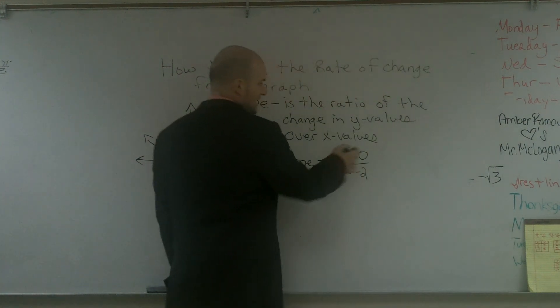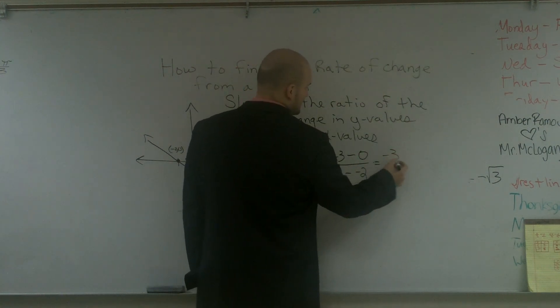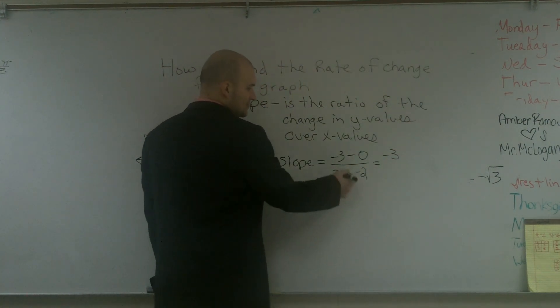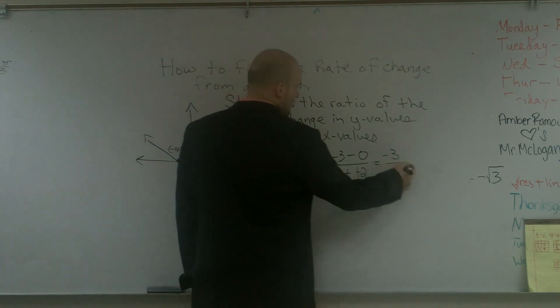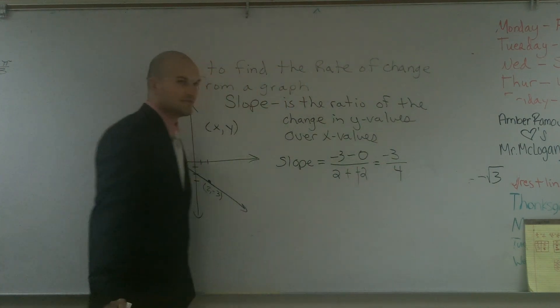Now, negative 3 minus 0 is obviously going to be negative 3. And 2 minus negative 2, those both become positive, and we get 4. So it's negative 3 fourths.